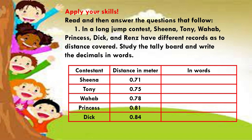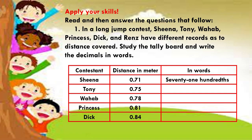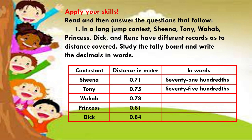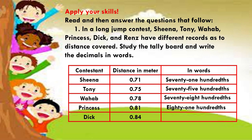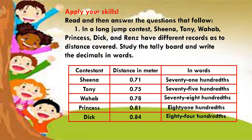The distance in meters in words: The answer to number 1 is 71 hundredths. Number 2: 75 hundredths. Number 3: 78 hundredths. Number 4: 81 hundredths. And the last number: 84 hundredths.